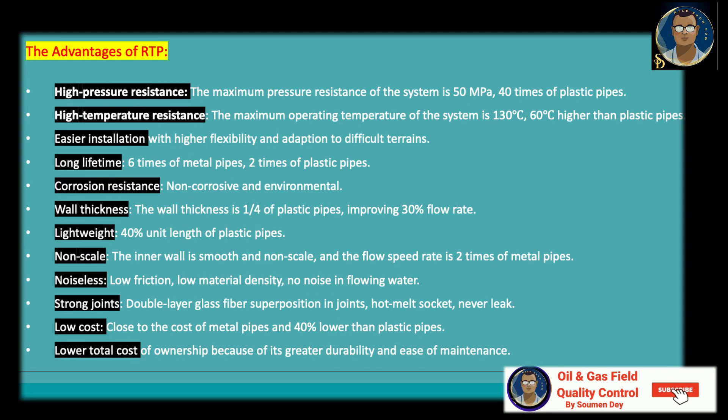Let us discuss some advantages of RTP. High pressure resistance: the maximum pressure resistance of the system is 50 megapascal, 40 times that of plastic pipes. High temperature resistance: the maximum operating temperature of the system can be 130 degrees centigrade, which is 60 degrees higher than plastic pipes. Easier installation with higher flexibility and adaptation of different alignments. Long lifetime: six times that of metal pipes and two times that of plastic pipes. Corrosion resistance: non-corrosive and environmental.